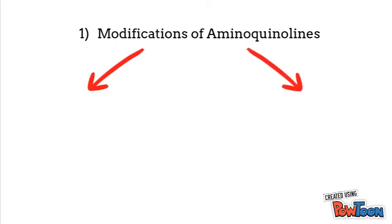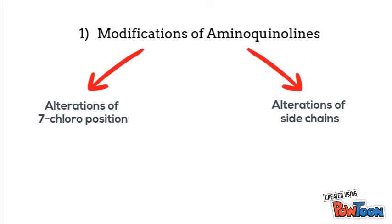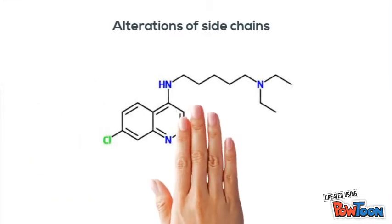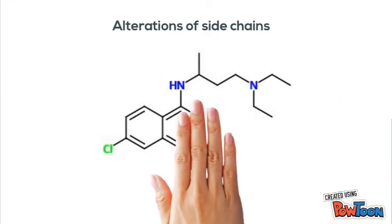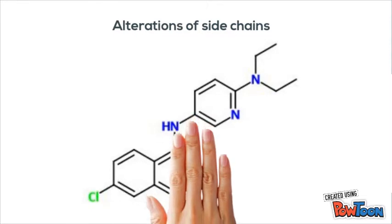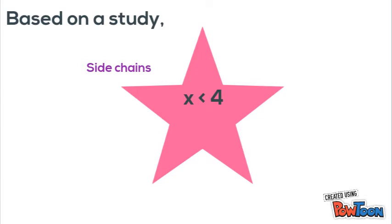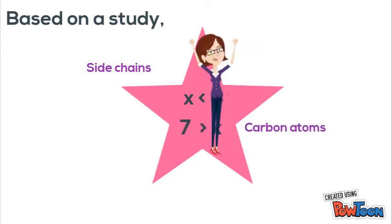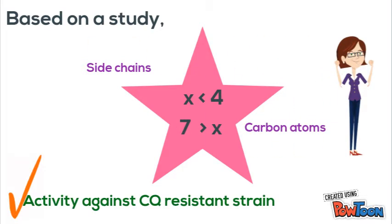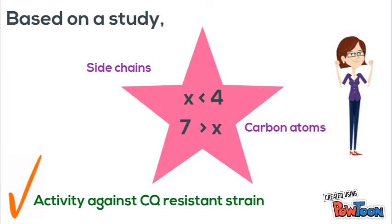Apart from altering the 7-chloroposition, we even tried to alter the side chains by changing the side chain length and adding a benzene ring. This is based on a study that claimed side chains shorter than 4 carbons and longer than 7 carbon atoms had good activity against chloroquine-resistant strains.